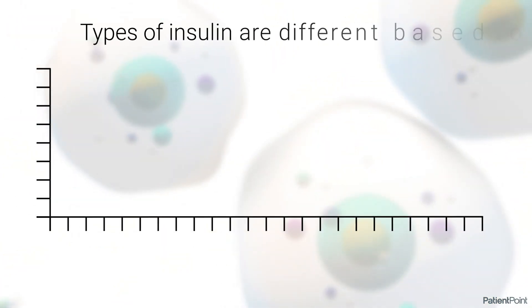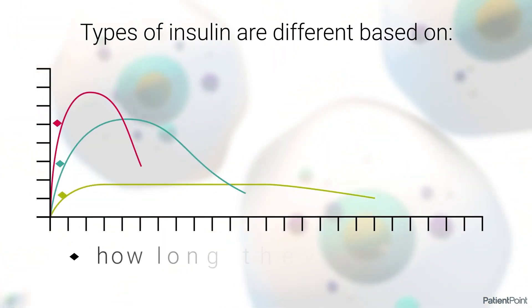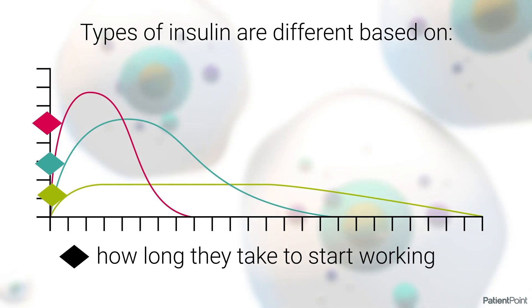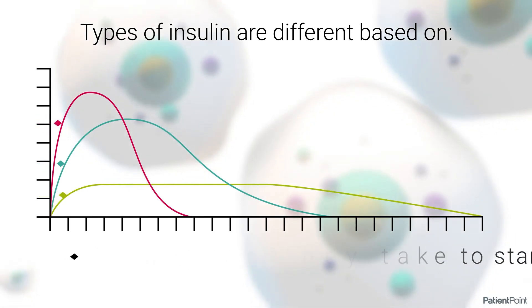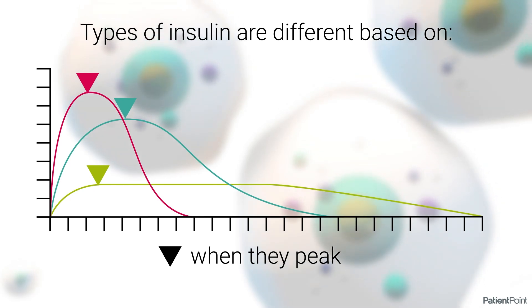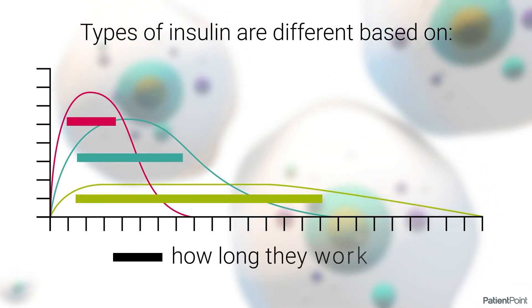The types of insulin are different, based on how long they take to reach your bloodstream and start working, when they peak or work the strongest, and how long they work.